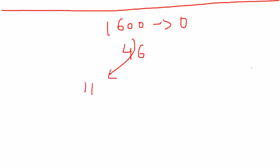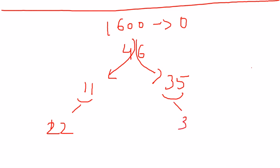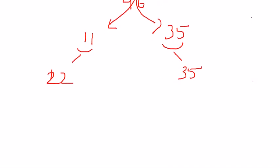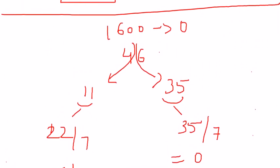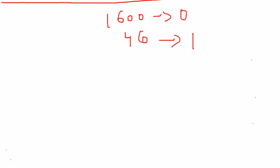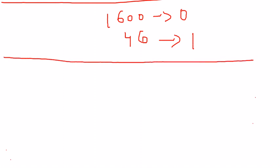For 1600 years we have 0 odd days. Now, before making a mistake by writing 47 years, we write 46 years because the 47th year is not yet completed. For 46 years, there are 11 leap years and the remaining 35 are non-leap years. For leap years: 11×2 = 22 odd days; for non-leap years: 35×1 = 35 odd days. Dividing 22 by 7 gives remainder 1; dividing 35 by 7 gives remainder 0. So for 46 years we have 1 odd day.